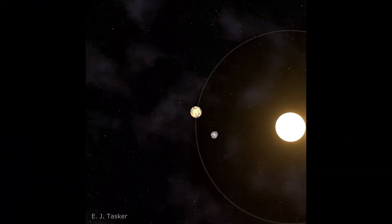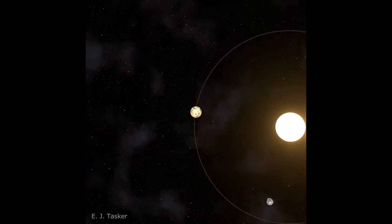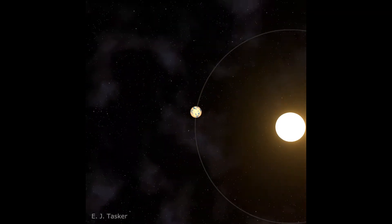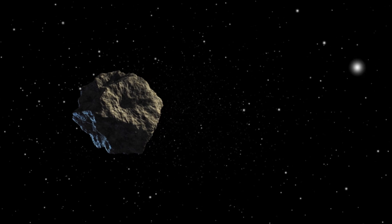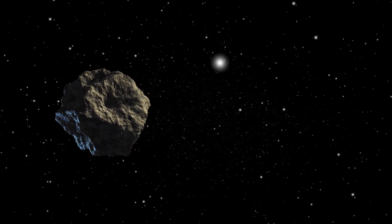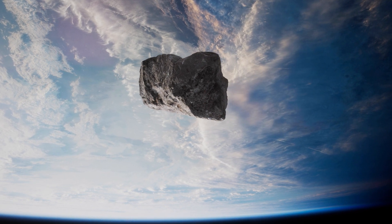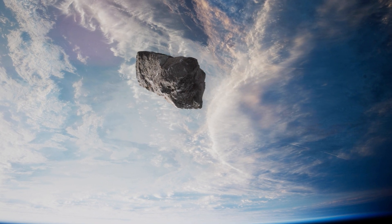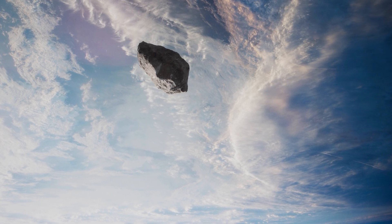This dance between the gravitational pulls of Earth and the Sun keeps the mini-moon in its temporary orbit. What's particularly exciting about 2023-DW is how long it's expected to stick around. According to initial calculations, this little space rock is set to orbit Earth for about two months. That's a decent visit in cosmic terms.